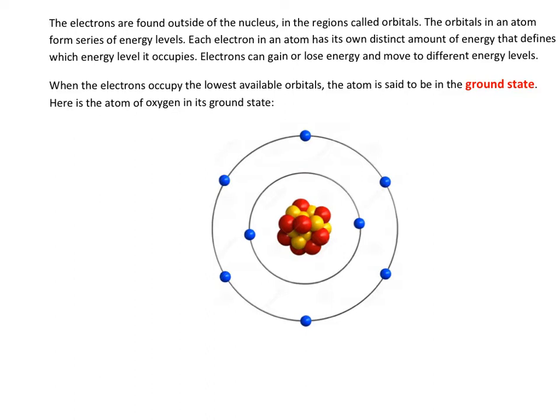Here is the atom of oxygen in its ground state. How do I know this is the oxygen atom? Because I see eight protons — one, two, three, four, five, six, seven, eight — eight protons define this as the atom of oxygen. And I see eight electrons, which makes this atom electrically neutral.